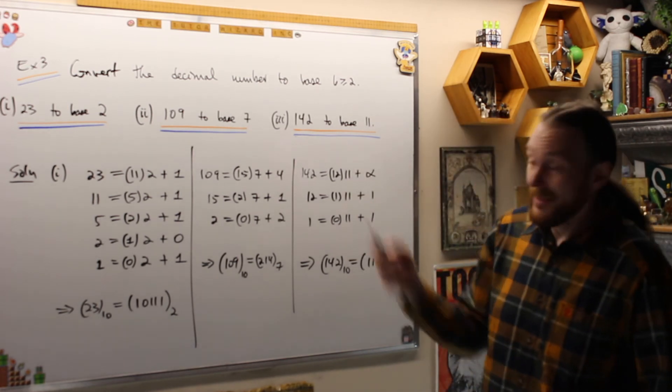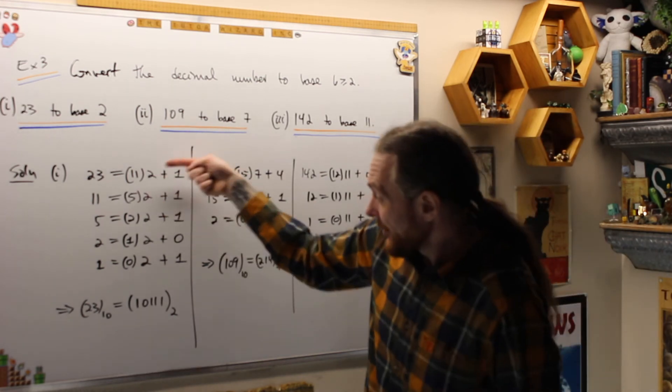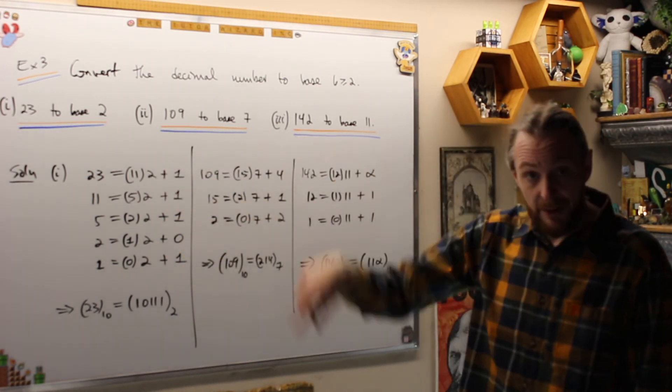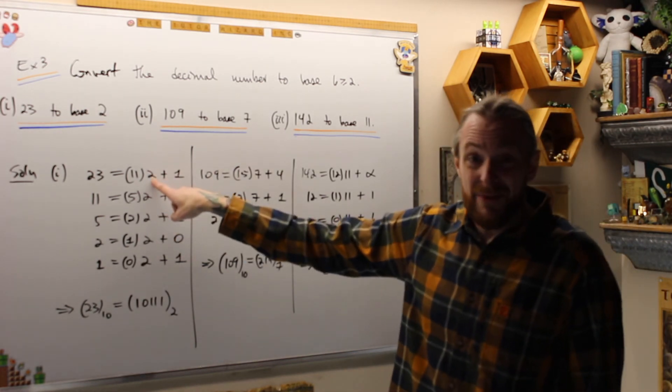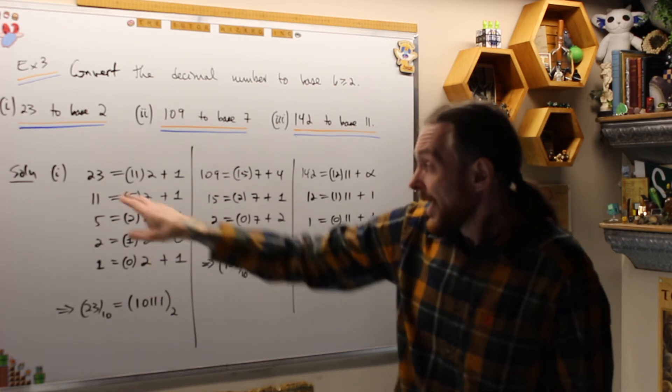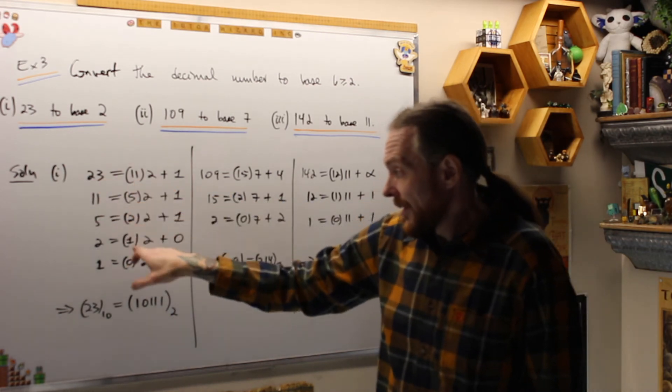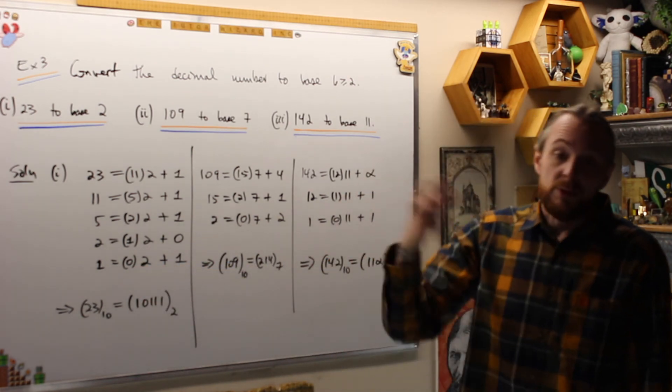What that tells us is 142 base 10 is equal to 11-alpha base 11. And this is how we convert from decimal to the other base. In each one, we use iterations of the division algorithm, finding quotient and remainders. When I divide one number into another, who's dividing who? Every time we do it, the base B is who we're dividing into every one. And we use the original number, then we use the quotients in every step to get this until we get zero. That's how I convert from decimal to base B.